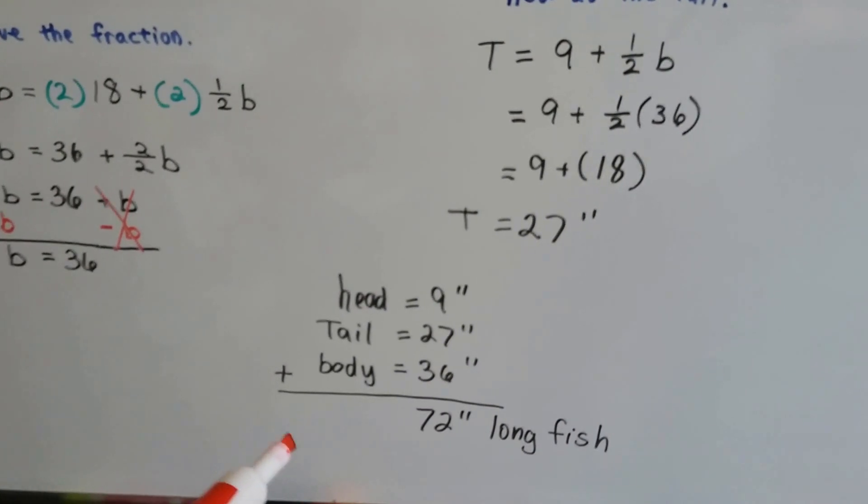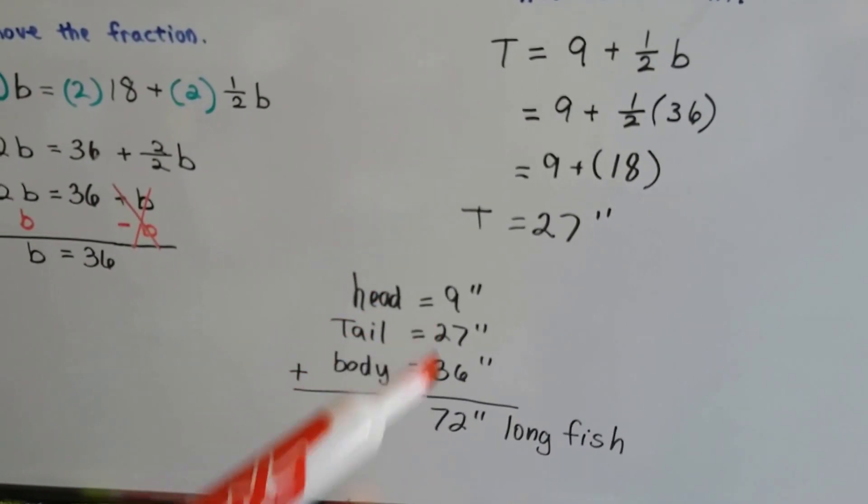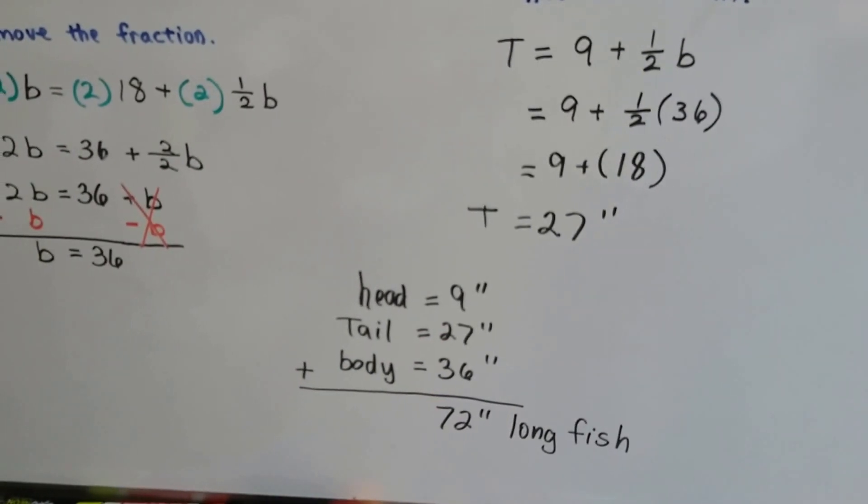When we add these together, we get the head is nine, the tail is 27, the body is 36, and the fish is 72 inches long.